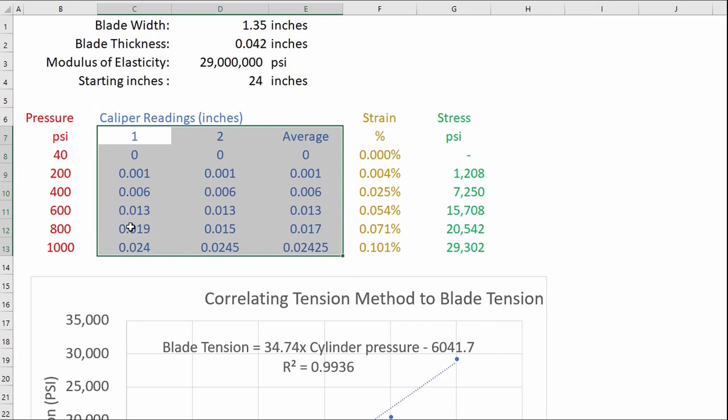And why I do this more than once is you just want to make sure that it's consistent. You can see here that at the 800 psi mark I got a little bit of a variation between readings, 19 thousandths versus 15 thousandths, and I'm sure if I did this a third and a fourth time I'd probably find that one of these was more accurate than the other reading but for purposes of this exercise we just averaged them together.